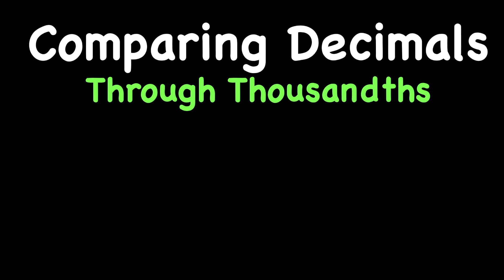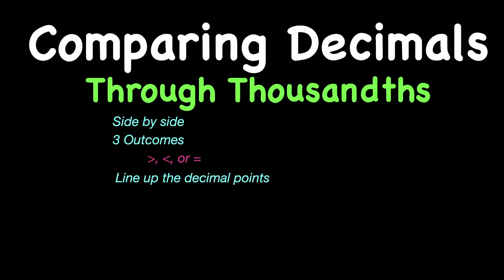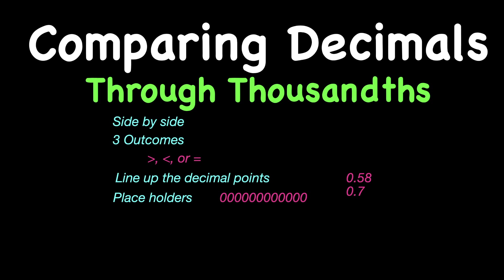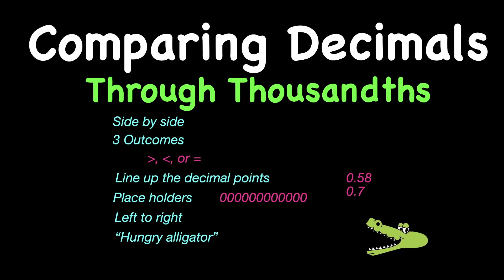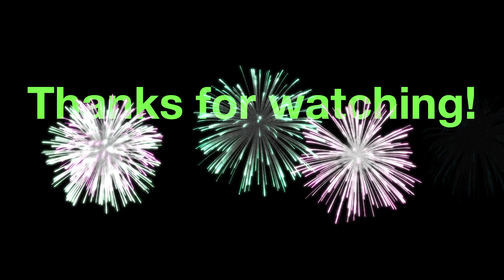Our lesson today was comparing decimals through thousandths. Comparing means putting numbers side by side — there are three outcomes: greater than, less than, or equal to. Line up your decimal points, either mentally or by stacking them physically. Put in your placeholders — zeros for the empty spots. Work from the left side to the right side, and don't forget the hungry alligator. Thank you for watching, everybody — great job, and we hope to see you on the next one.